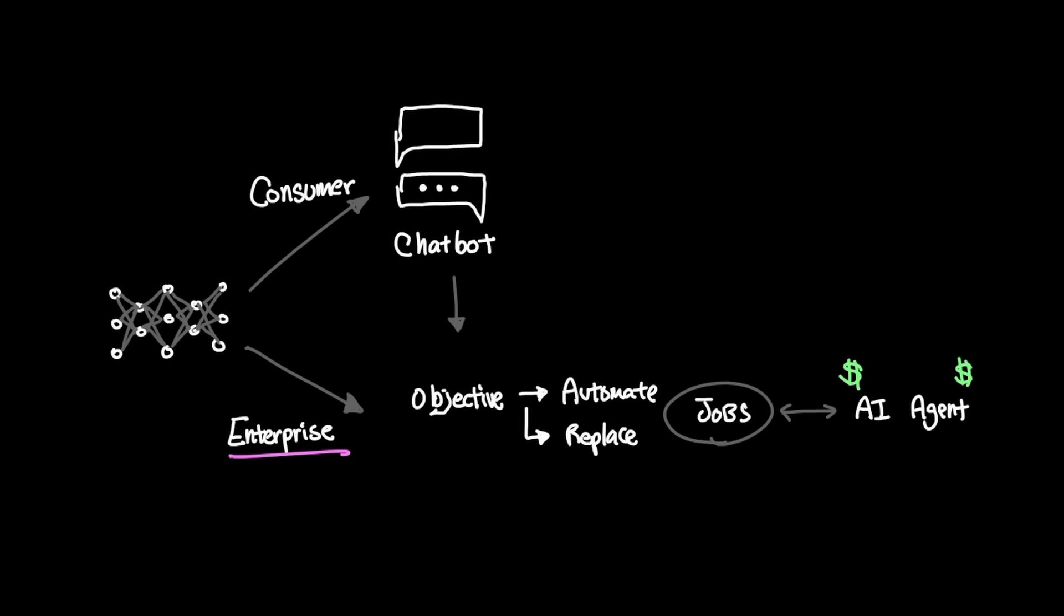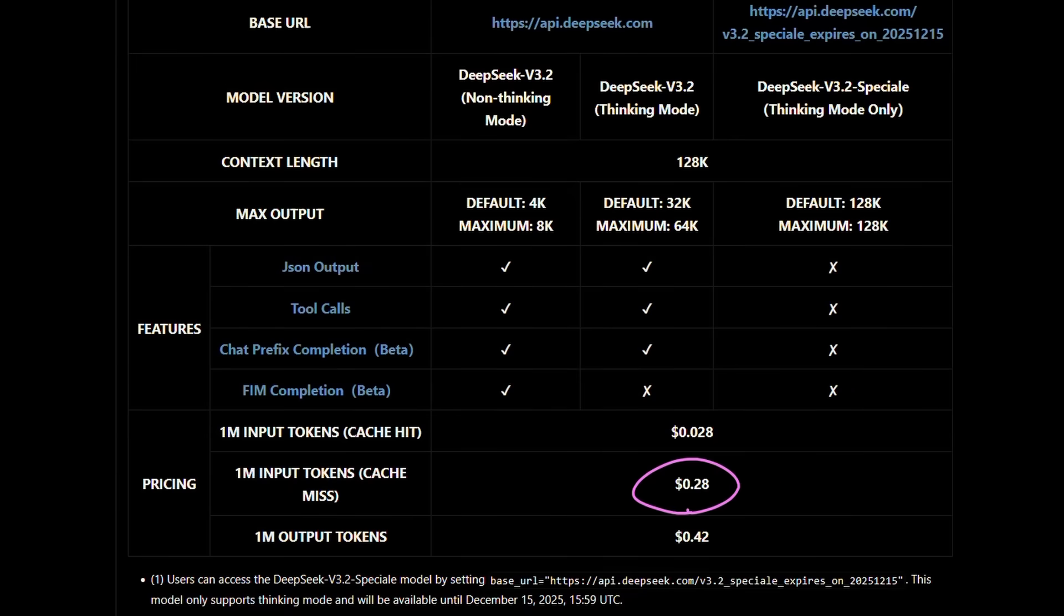And you want to keep your cost as low as possible. And guess what DeepSeek v3.2's major strength is? Its cost. They lowered the cost of intelligence by a huge margin to $0.28 per million input tokens, which is a huge difference compared to other frontier models that we have in the US.